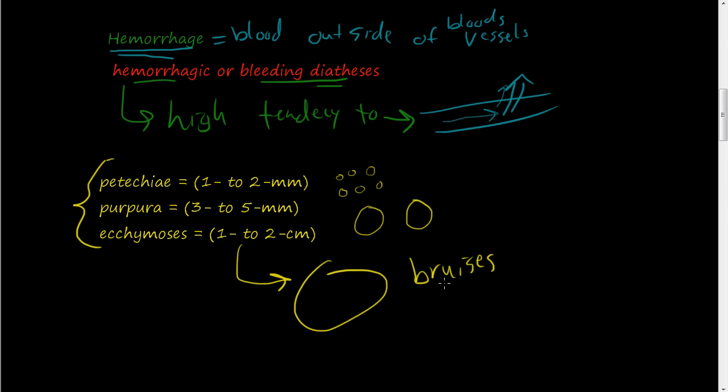So when you see a bruise on yourself and you get hit on the arm and then you start seeing that big spot, that's also called an ecchymosis. And that's just saying that there's a larger size of hemorrhaging going on in those blood vessels below the skin that you are seeing.